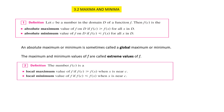In this video we are going to talk about maxima and minima. There are four different definitions we need to remember: absolute minimum, absolute maximum, local maximum, and local minimum.